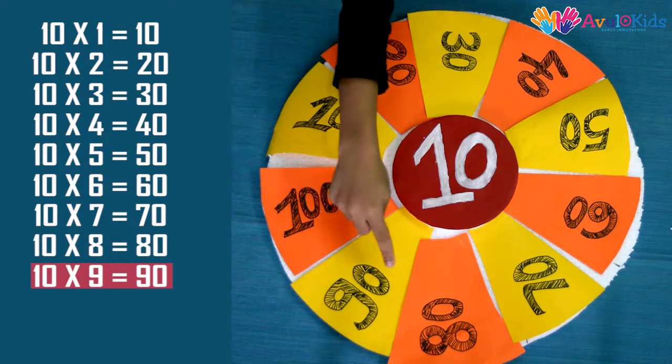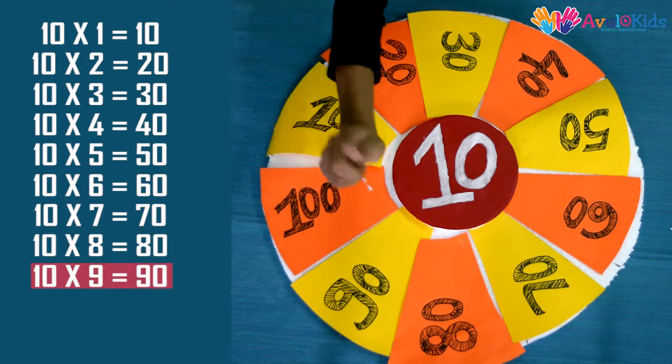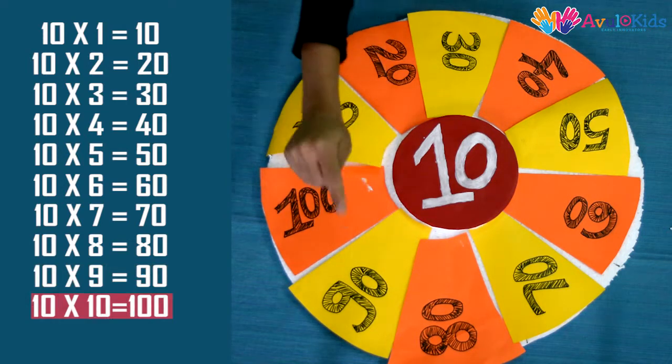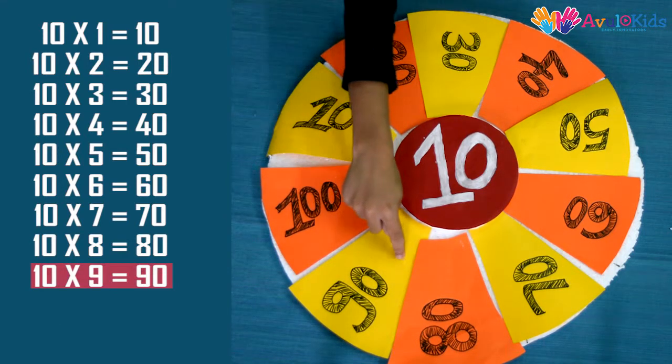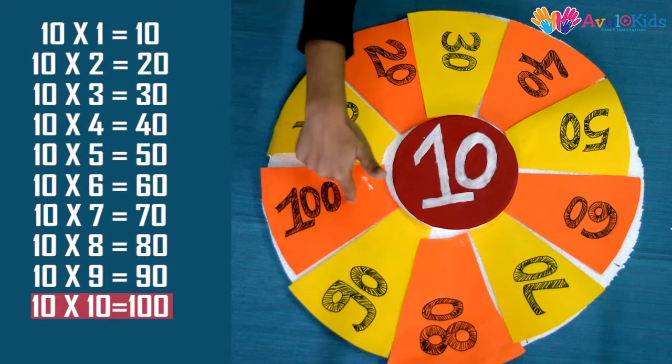10 nines are 90, and 10 tens are 100. 10 nines are 90, and 10 tens are 100. 10 nines are 90, and 10 tens are 100.